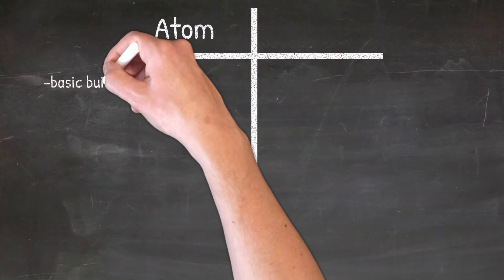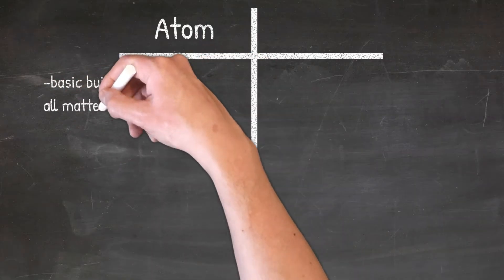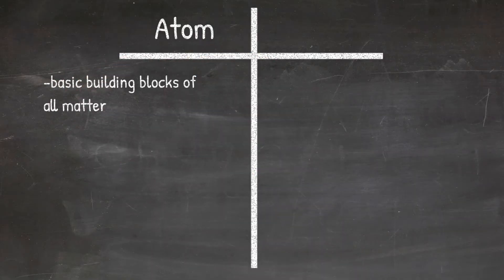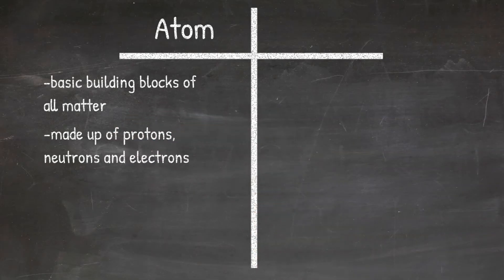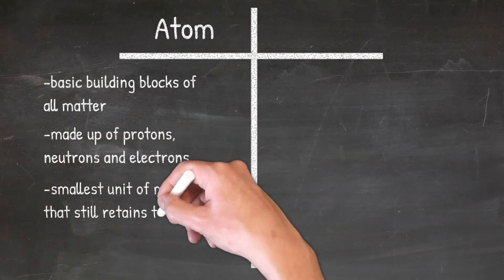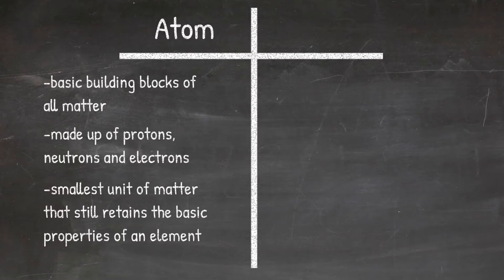It is important to remember that atoms are the basic building blocks of all matter and they are very small. They are made up of protons, neutrons, and electrons and they are the smallest unit of matter that still retains the basic properties of an element.